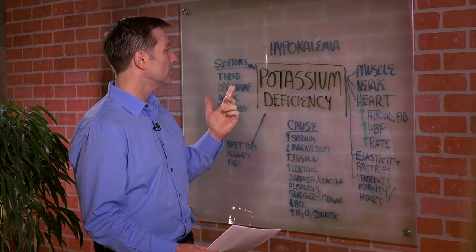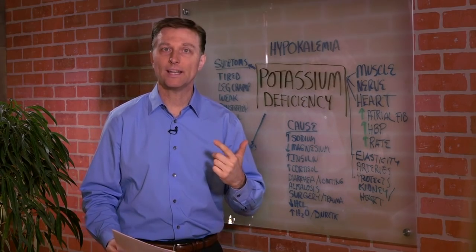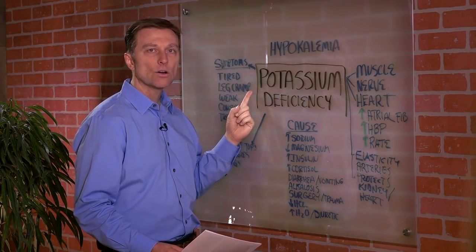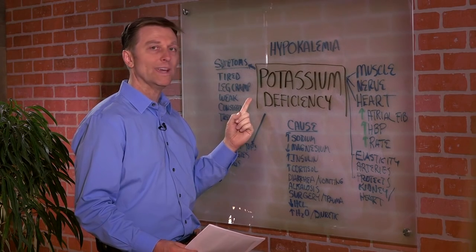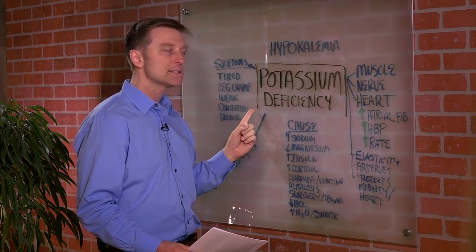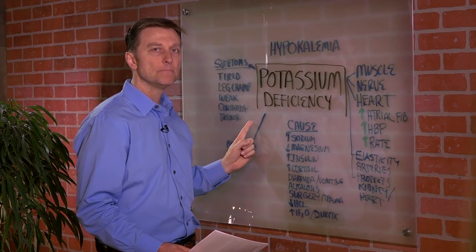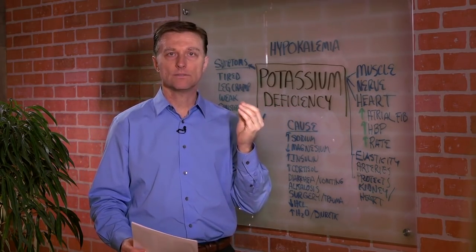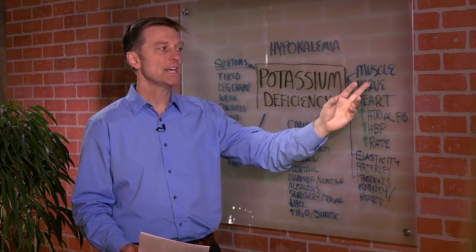Now, if you have a potassium deficiency, you might feel tired, leg cramps, muscle weakness, constipated, tremor, because potassium is intimately involved with muscle physiology.